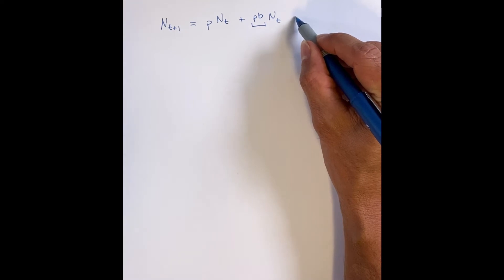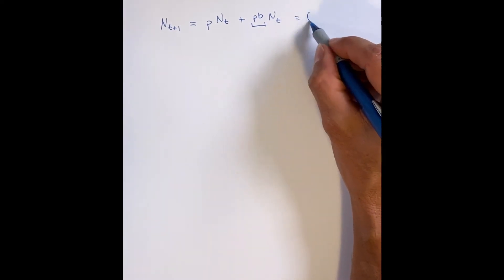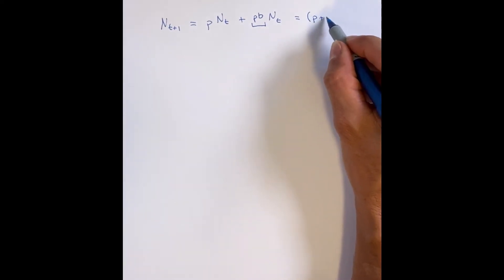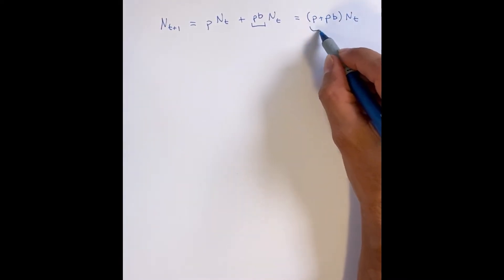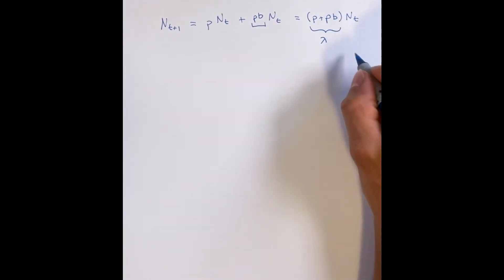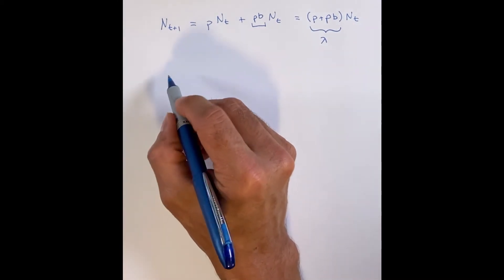So when you take the proportion that make it plus the proportion that make it and have offspring, p plus b, and you multiply that by how many you started with, this unit here that we call lambda is the finite rate of increase for the population.